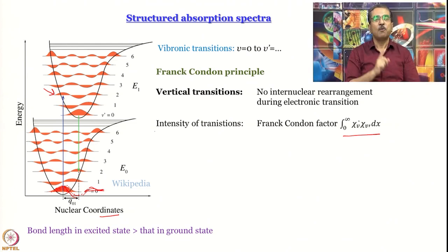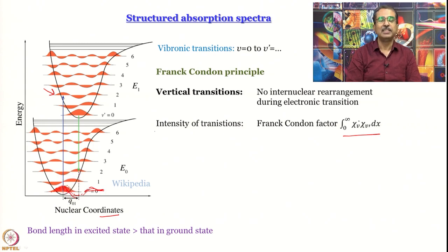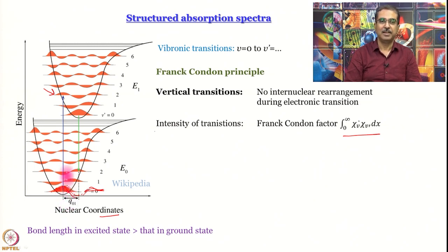All upward transitions start from the nuclear coordinate equal to the equilibrium bond length, because for v equal to 0 that is where the maximum of the wave function is — psi-star times psi is maximum there. So the maximum probability of finding this wave function is at the equilibrium bond length. Working out the Franck-Condon factors, the factor will be maximum for v-dash equal to 2.